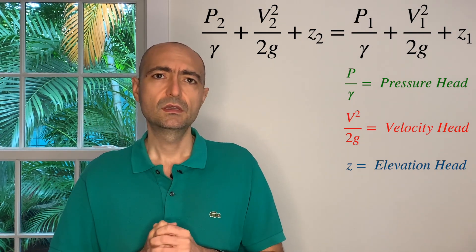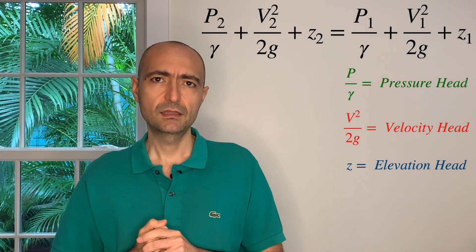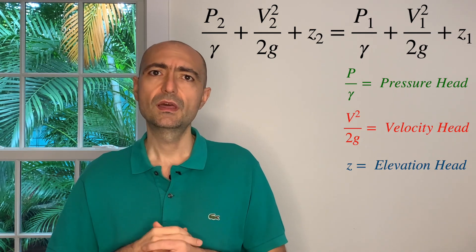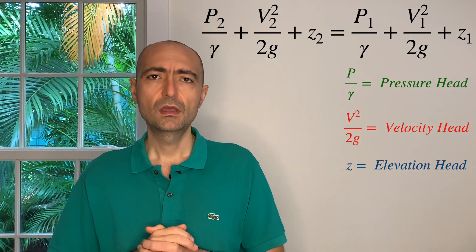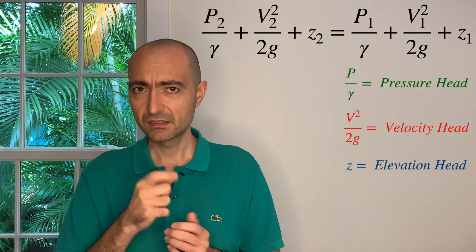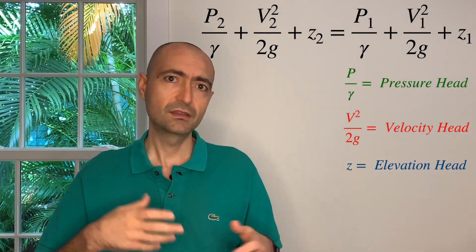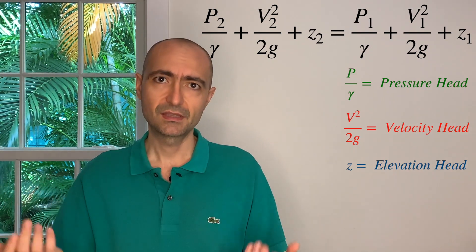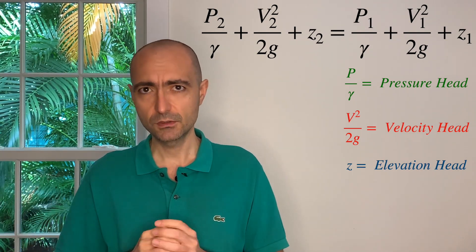Now this equation has special names for each term. The first term is called the pressure head, the second term is called the velocity head, and the third term is called the elevation head. The units of each term is in length, so pressure head is not in Pascal or psi, it's in length.